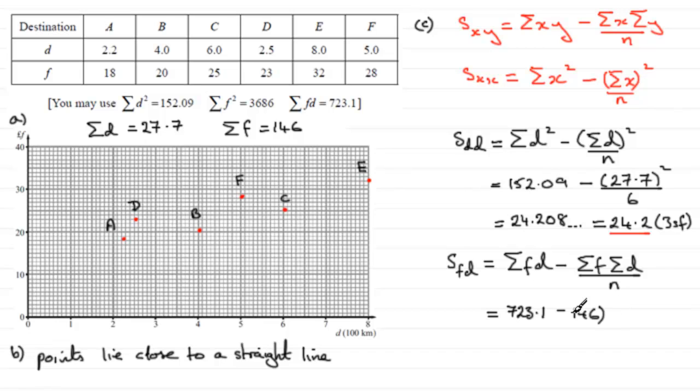Multiply that with Sigma D, 27.7 and divide that by N, N being 6. And again, if you do that on your calculator, what you'll find you should get is 49.066 and so on.